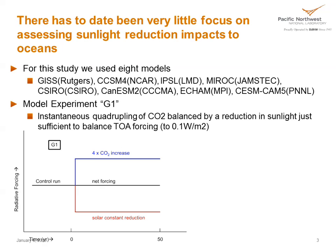To date there has been very little focus on assessing sunlight reduction impacts on oceans, and so we decided to take a look at it. For this study, we've chosen to focus on eight models from GeoMIP. They were just the first eight models that we could parse the ocean output from, so there was no reason to choose these out of the 20.